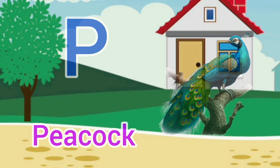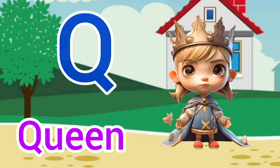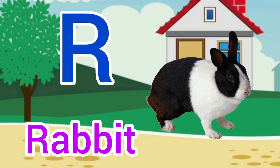Q for queen, queen means rani. R for rabbit, rabbit means gargos.